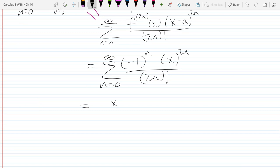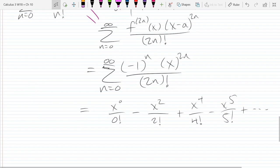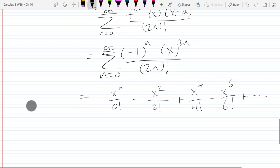So our first term, x to the zero over zero factorial. Minus x squared over, now I have to be careful here, it's two factorial. Plus x to the fourth over four factorial. Minus x to the sixth over six factorial. And now I'll just write plus dot dot dot. So I got my even power terms. Sign alternates, and I get my even factorials. Absolutely. And this is our cosine of x.